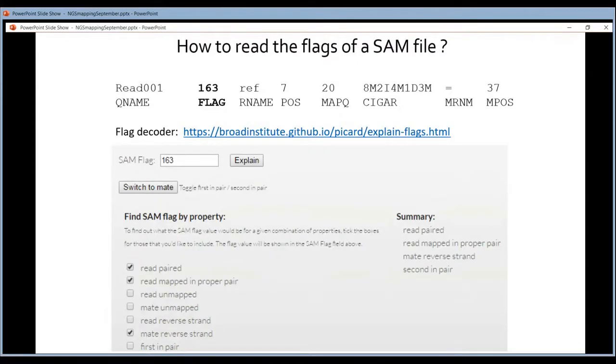First, the flag. Flags are always numbers like 163. What does it mean? There is a tool from the Broad Institute, a website, where you can type in the flag and then it will tell you what it means. So every flag has a special meaning. This one, 163, means this was paired-end sequencing. The two reads could both be mapped. They could be mapped in each other's vicinity and on opposite strands. That's what 163 means. So that's a good one. So all these flags have a meaning.